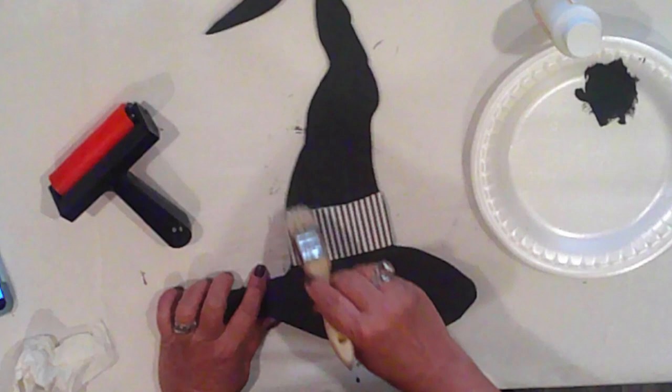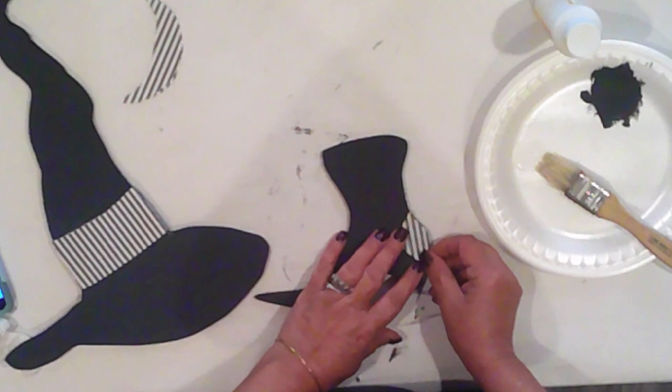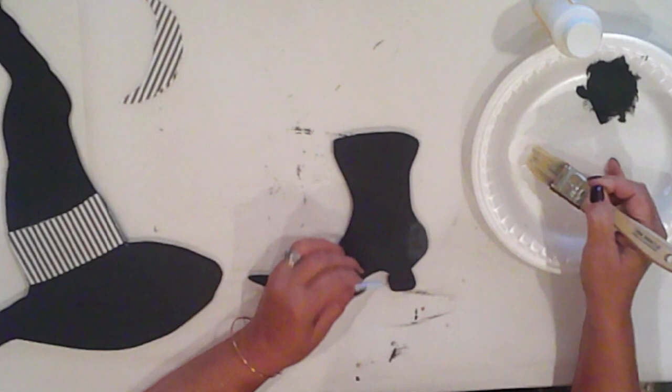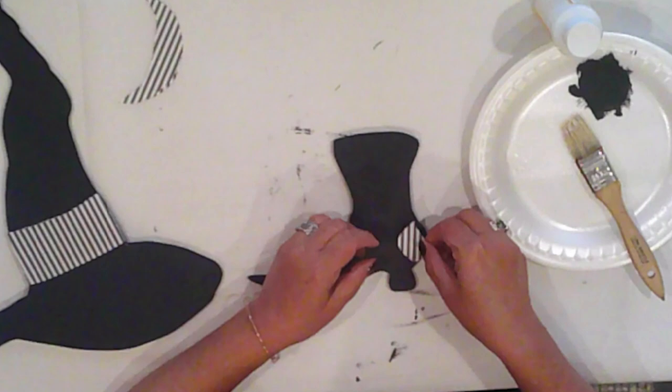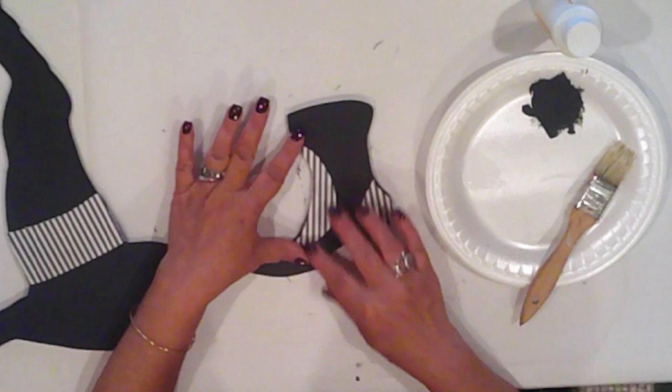I've also cut some details for the boots from the striped paper. I love black and white in general, but especially for Halloween. A little embellishment for the heels and also for the front of the boot. And I'll give those a topcoat too.